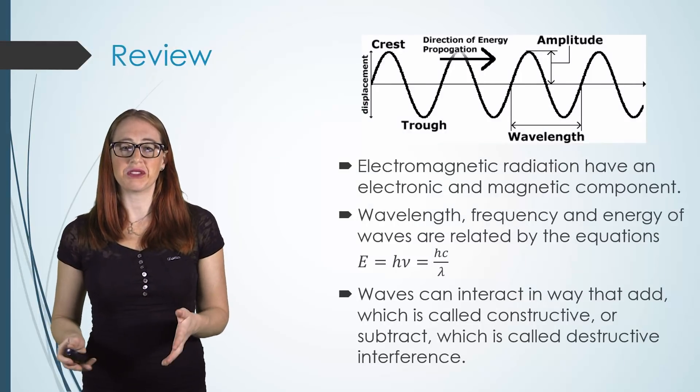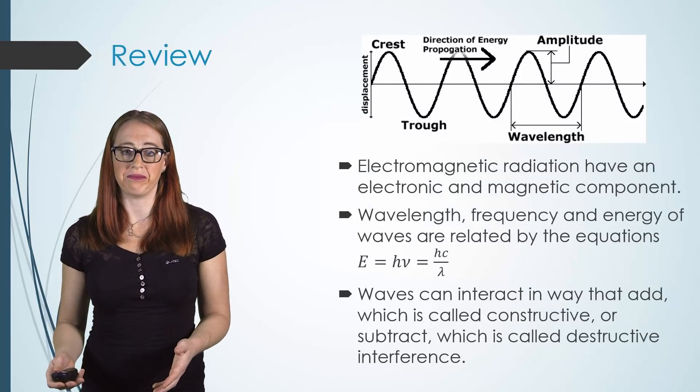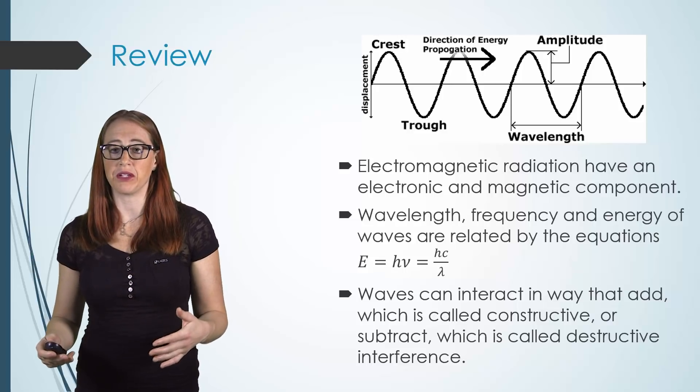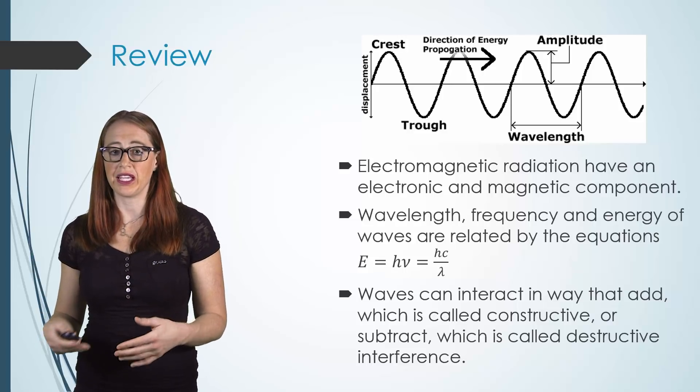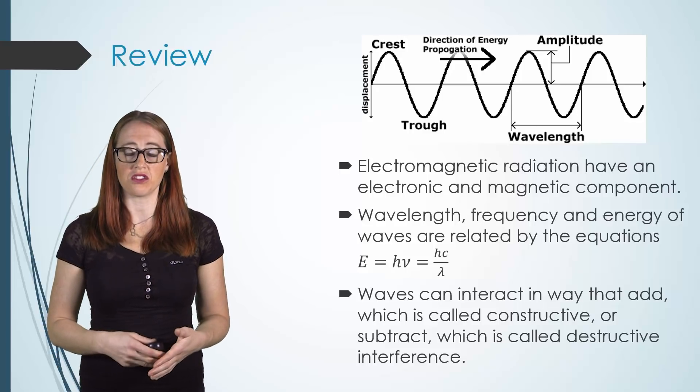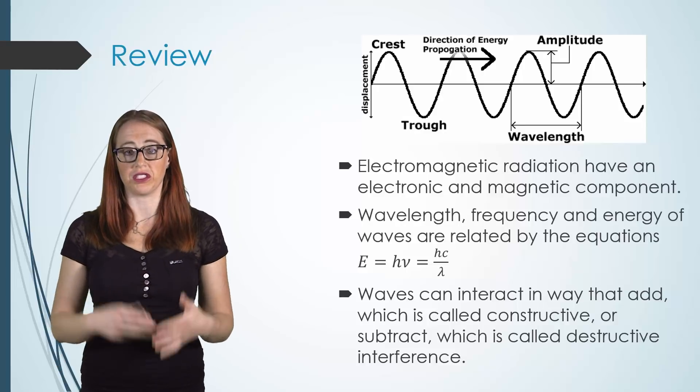Now you know that electromagnetic radiation have an electronic and magnetic component. Wavelength, frequency, and energy of waves are related by the equations E equals h nu and E equals hc over lambda. Waves can interact in a way that add, which is called constructive, or subtract, which is called destructive.